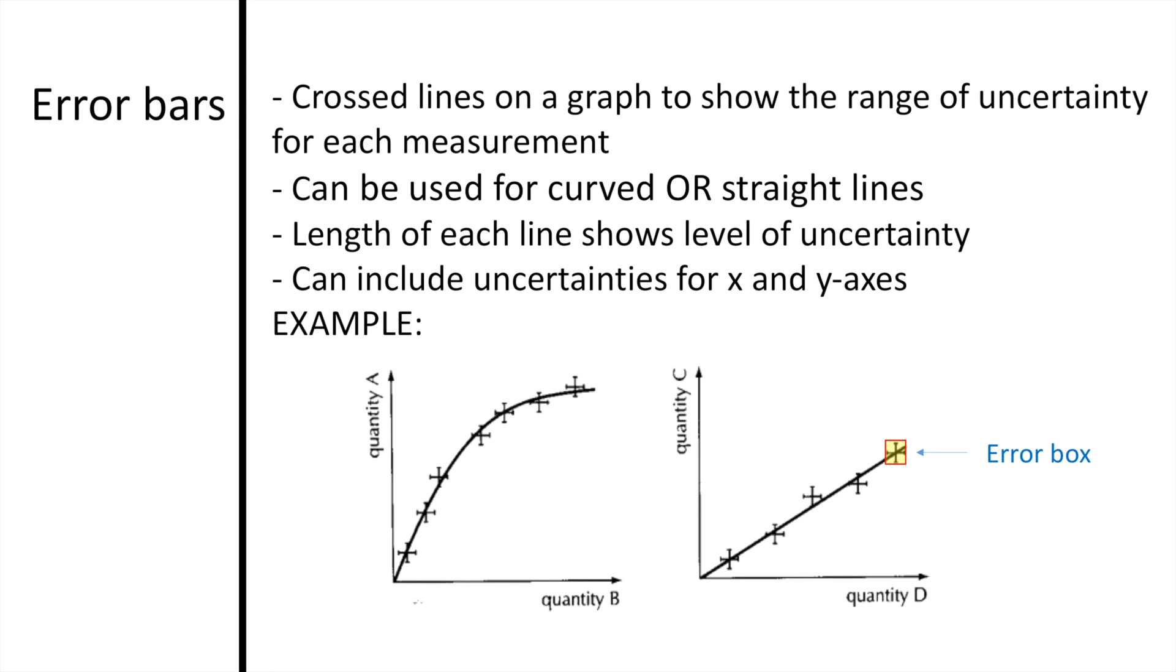Error bars are an important part of graphs when we are taking into account uncertainties in our measurements. Error bars are crossed lines on a graph to show the range of uncertainty in our measurements. Notice in the graphs below that there are vertical lines crossed with horizontal lines. These vertical lines show the area of uncertainty for that specific y-value. The horizontal lines show the range of uncertainty for that x-value.